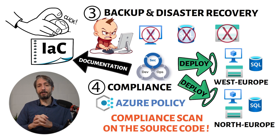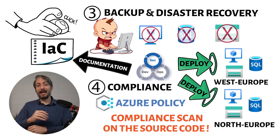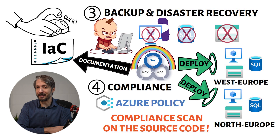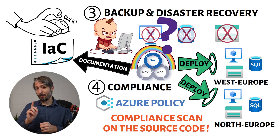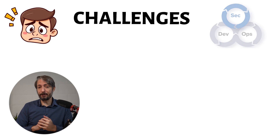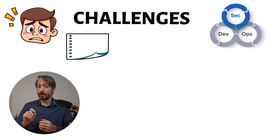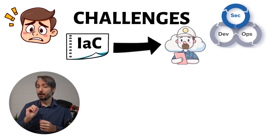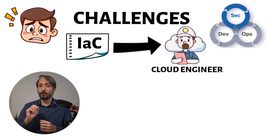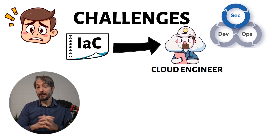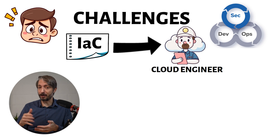Those are the four biggest benefits of DevSecOps and Infrastructure as Code. But is everything rainbows and sunshine with DevSecOps? Most definitely not — there's a balance to be had. The first challenge is that using Infrastructure as Code requires a specific IT profile: a cloud engineer. You need real experience to be effective with it — you can't just take a few weekends and expect to be ready to set up your whole environment.